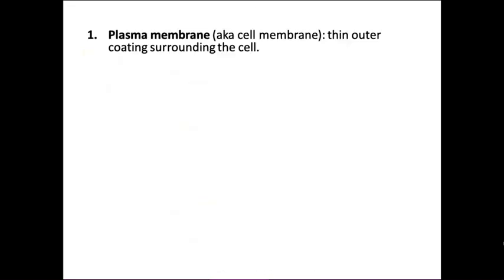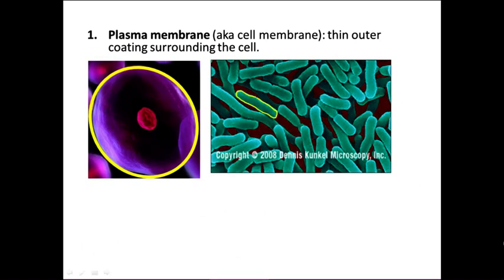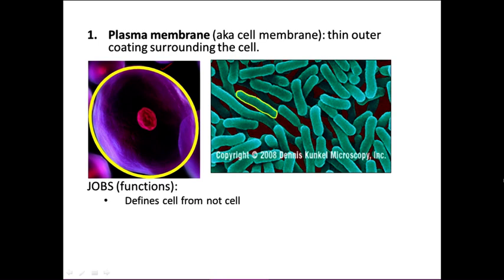The first of those five components is the plasma membrane. This is the thin outer coating surrounding the cell. Here is a bacterium that's circled — it's just the outer part of the cell. It has some important jobs. First of all, it defines what is cell and what is not cell. Cells need to maintain organized complexity, and one way they do that is by making a barrier between themselves and the outer world.